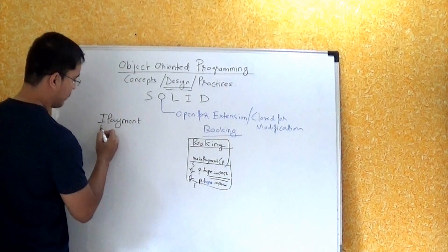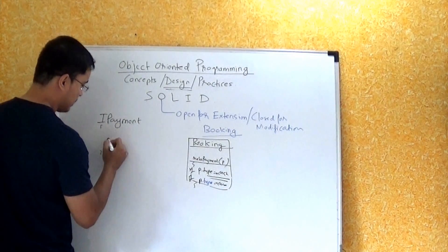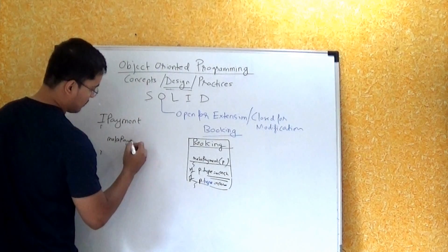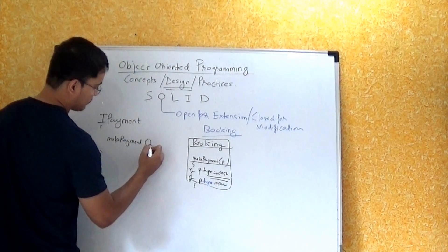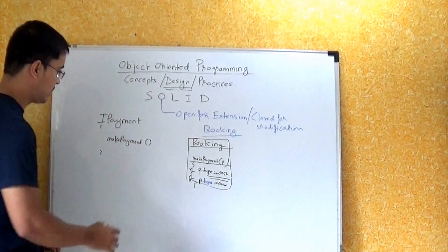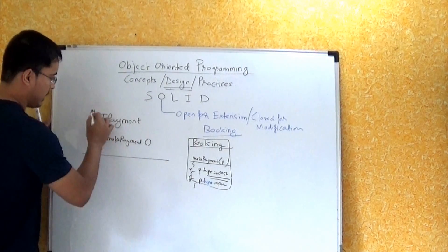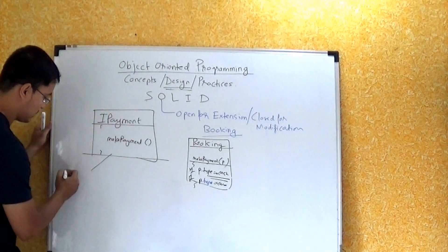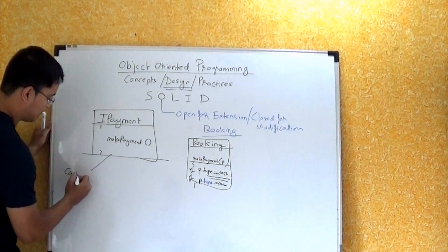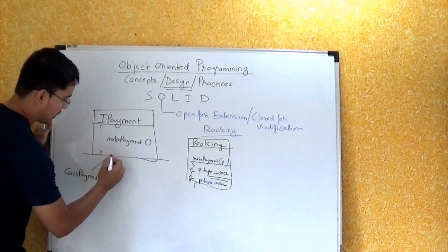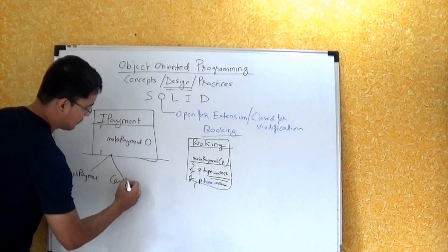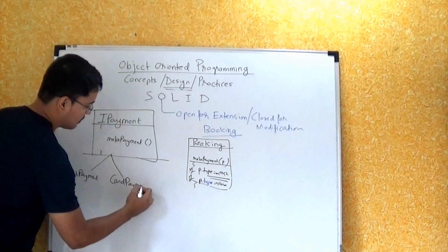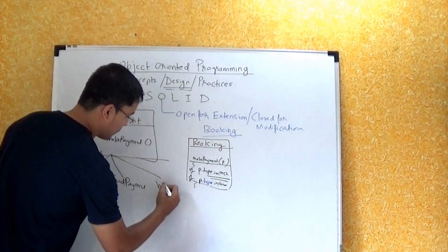IPayment interface has one method, that is MakePayment. This MakePayment method, this interface, then will be implemented by different kinds of classes such as CashPayment with MakePayment, then CardPayment, then let's say WalletPayment.